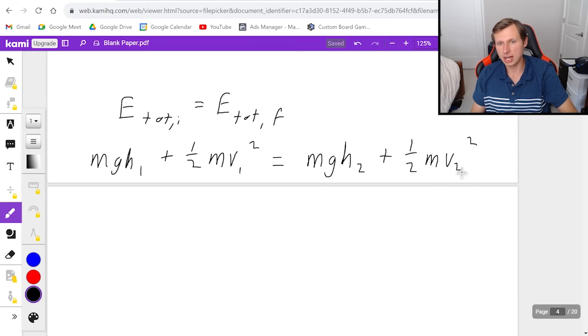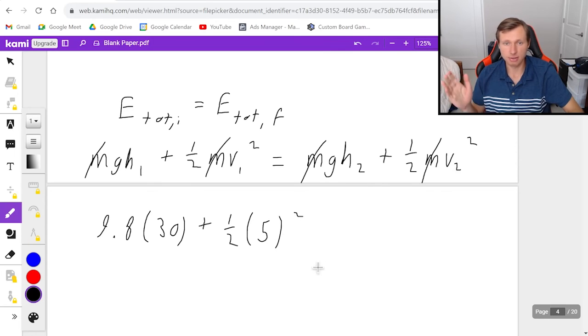We don't know V2, the velocity at the end, and we do not know the mass either, but the good news about the mass is that it cancels out just like the last problem. This happens a lot. It won't happen when you have a spring involved. Luckily, we don't have a spring, so it just cancels. So G is 9.8, height 1 is 30, that part's easy, plus 1 half V1 squared, that's going to be 5 squared. Again, very simple.